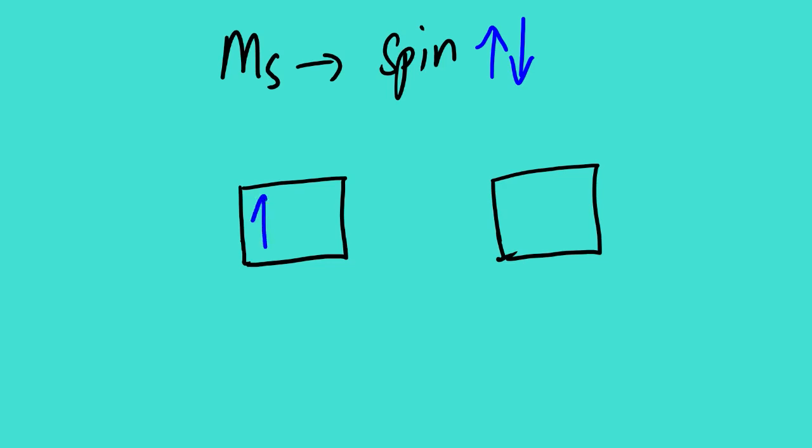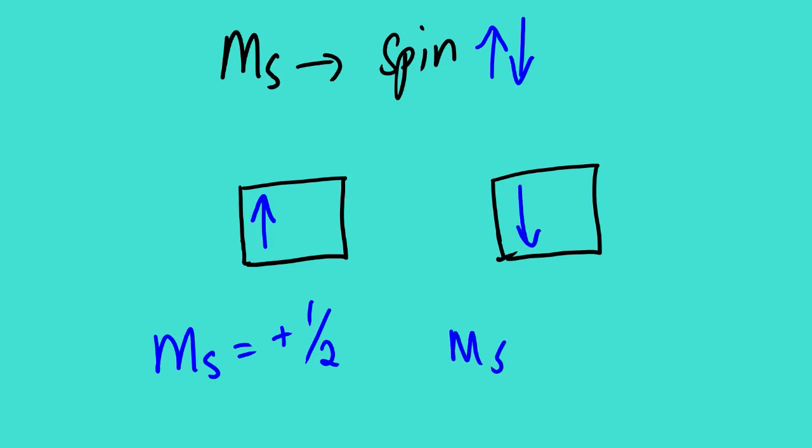Our last quantum number is MS, the electron spin. From the orbital diagram, we have boxes with electrons inside. If the electron faces up, the value of MS is positive one-half. If it faces down, MS is negative one-half. So MS is either positive one-half or negative one-half.